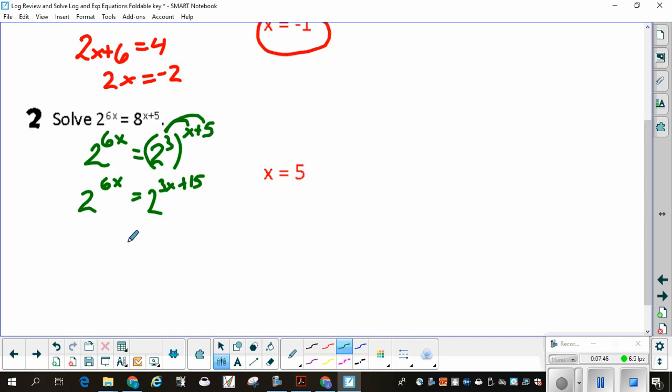Now that you have like bases, you can set the exponents equal to one another. 6x is equal to 3x plus 15. Subtract 3x from both sides. Really common mistake, I can't tell you how many times somebody will put down 2x equals 15. Remember you're subtracting, not dividing here. Once you have 3x equals 15, now divide both sides by 3 and x is equal to 5.